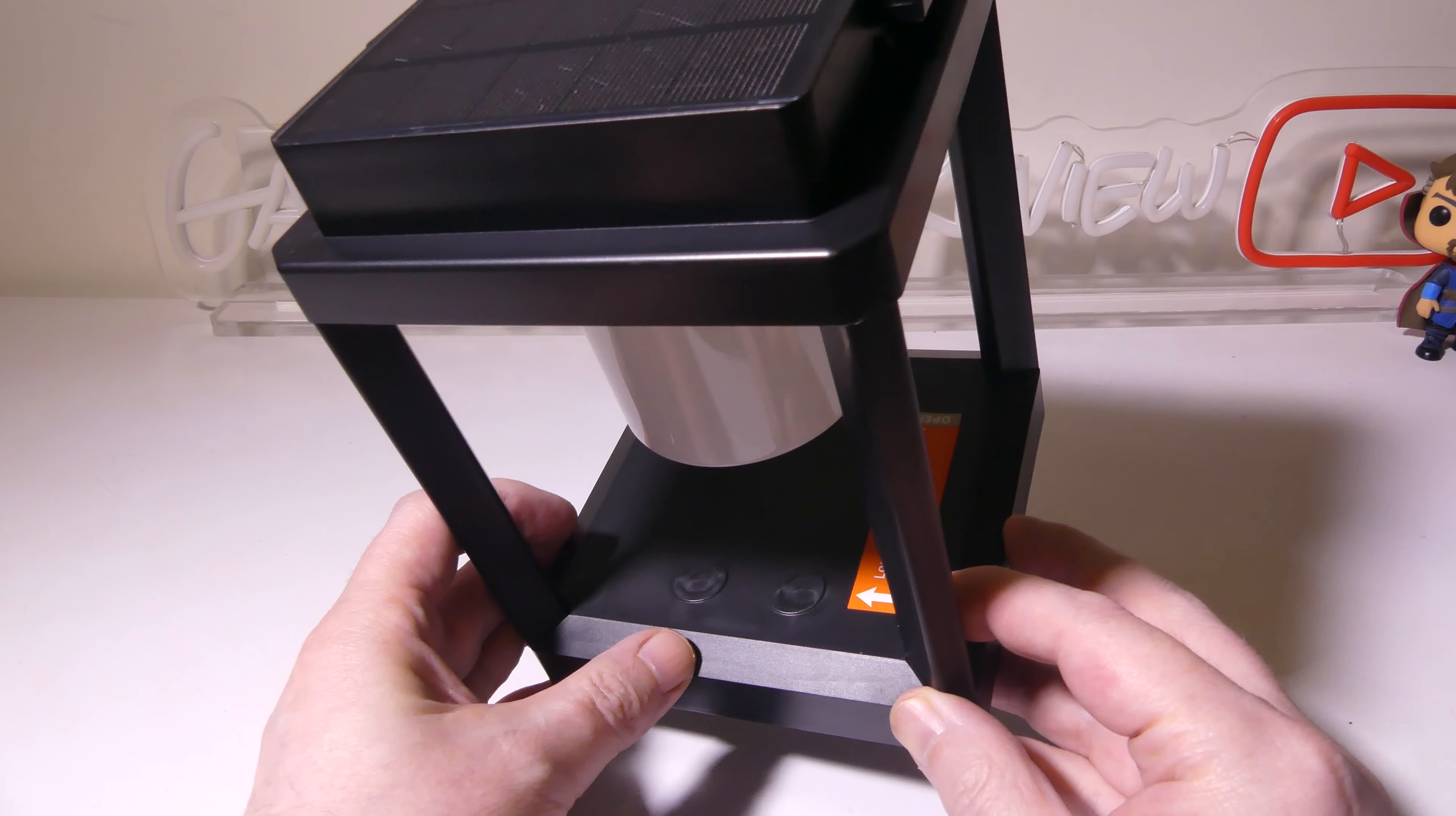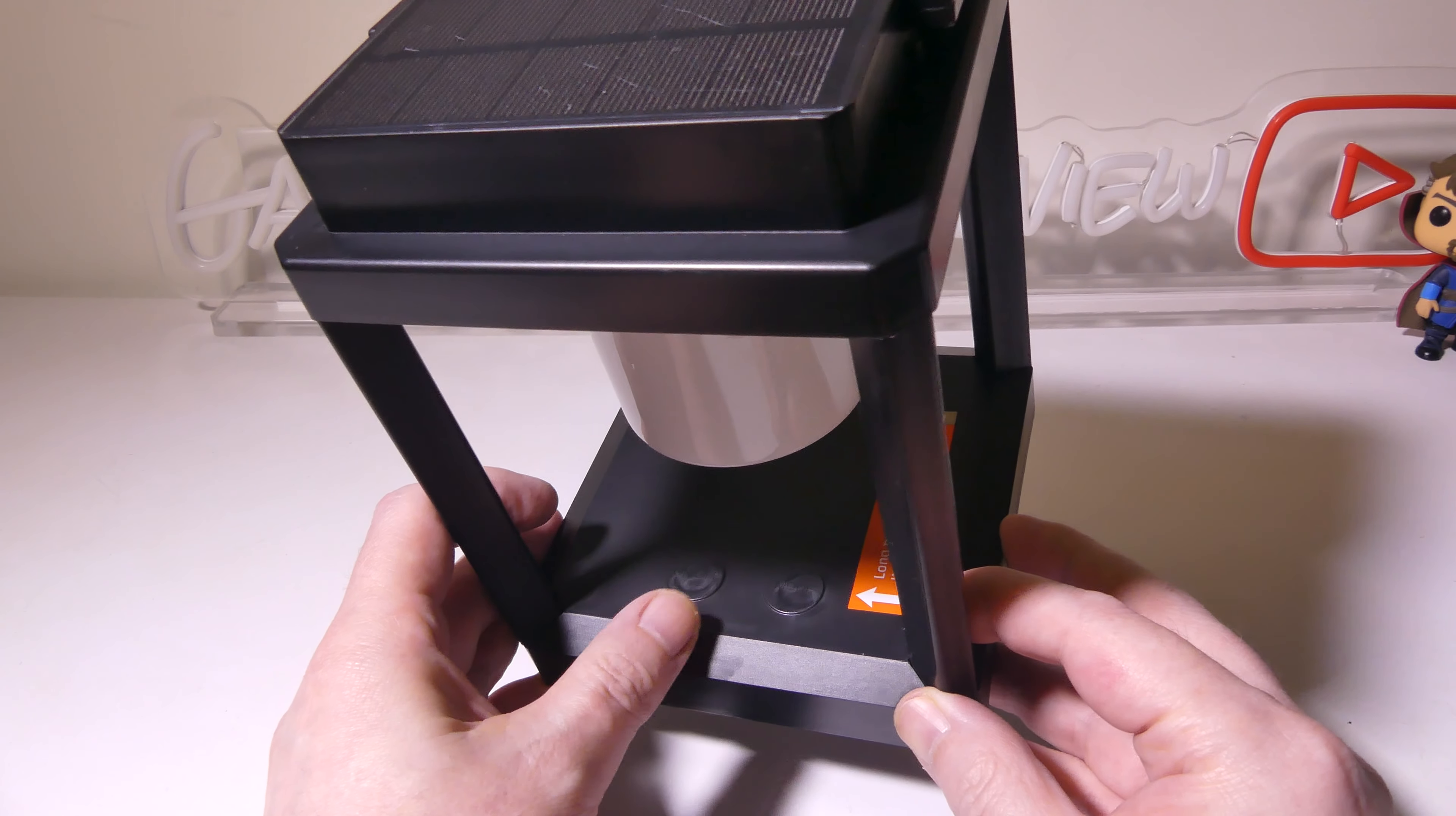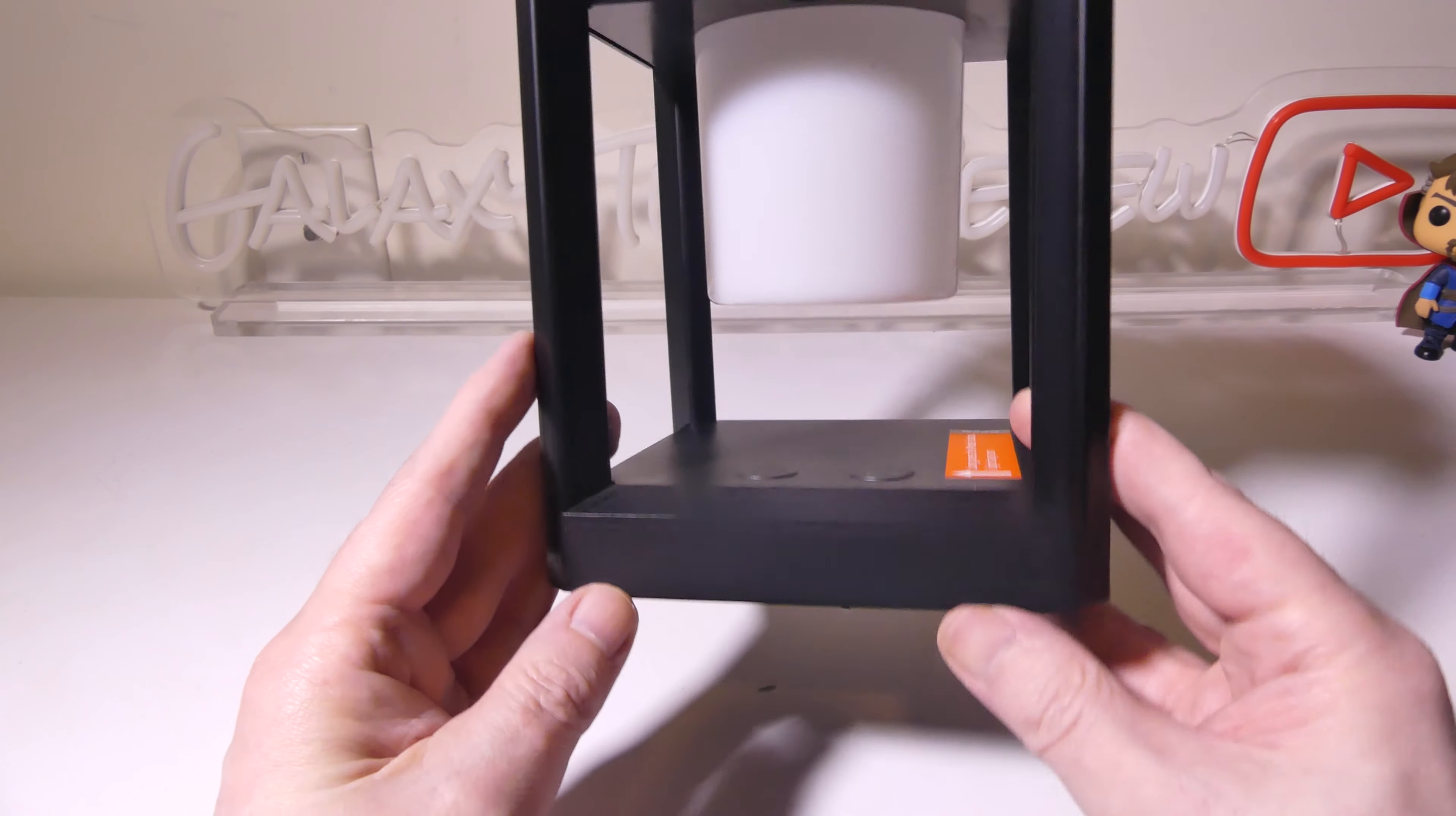Now, let's take a look at the main unit here. You do have two touch-sensitive buttons. One's an on and off button that does a couple different things other than on and off, and the second one is a mode button.